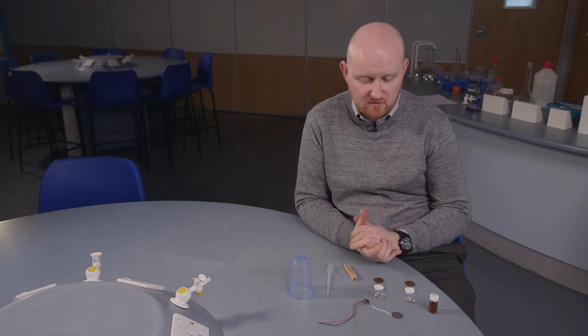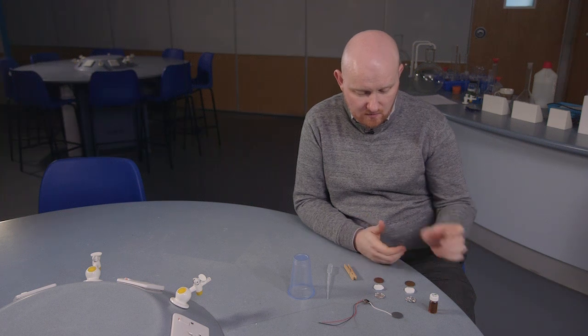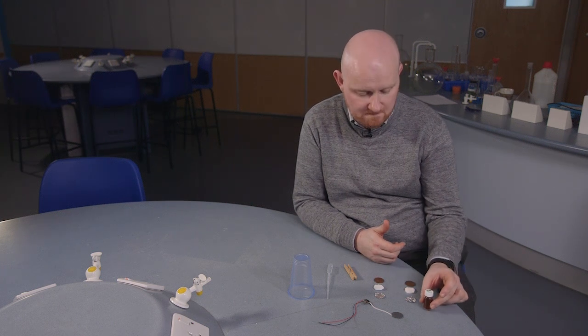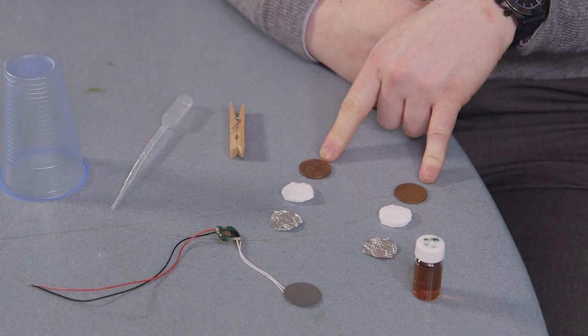What we've got here is a range of little bits and pieces to make this voltaic cell. So we've got some vinegar, this is just ordinary malt vinegar. We have some copper coins, so 2p coins.